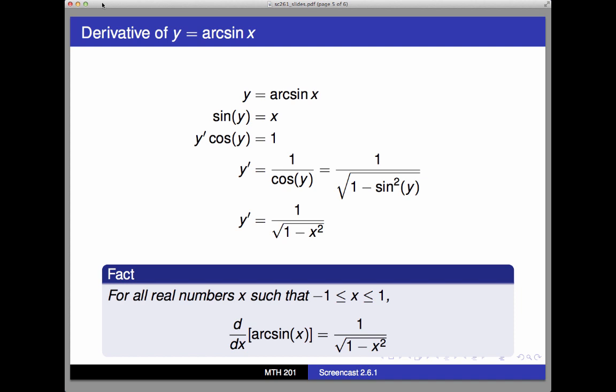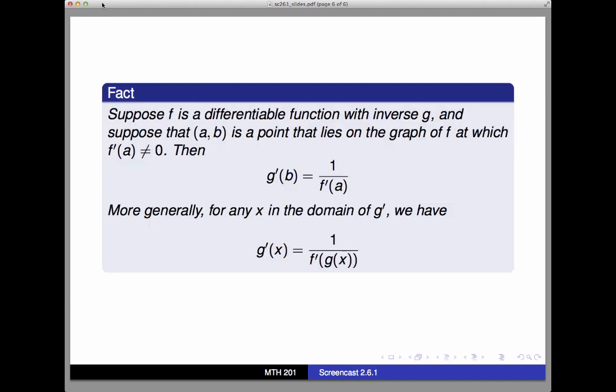Again, the process is at least as important as the result here. To get this derivative formula, we wrote out what we wanted to differentiate, then used the definition of an inverse function to rewrite that. Then we took a derivative using the chain rule, and then simplified the result. This is a general derivation technique that will work with any inverse function. In fact, one general result we have from the section is that if f is differentiable with an inverse function called g, then for any x in the domain of g, g prime of x is 1 over f prime of g of x.